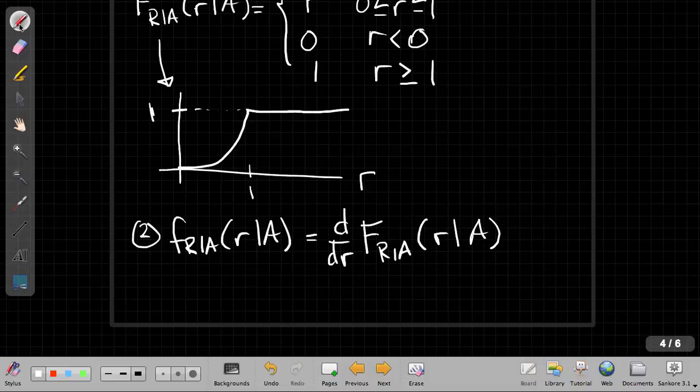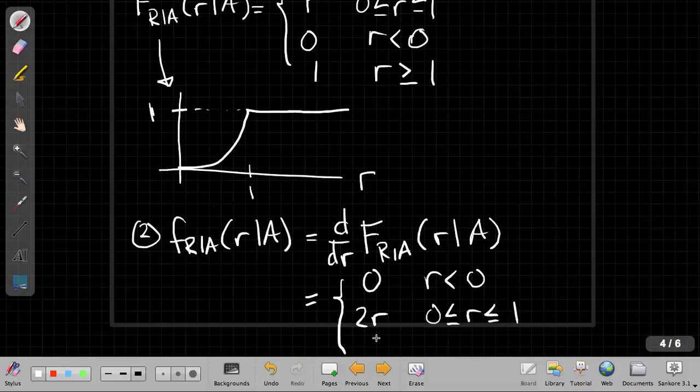And we can just very quickly get that from what we had above here a second ago. And we can say this is going to be equal to, if I write them in order, I guess 0 for r less than or equal to 0, 2r, because the derivative of r squared is 2r between 0 and 1. And then it will be 0 again, because the derivative of 1 is equal to 0 for r bigger than 1.